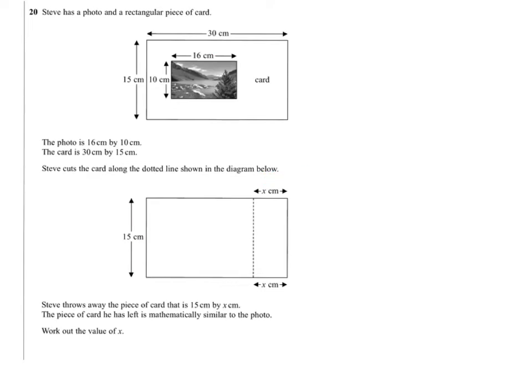So the 15 stays but we're going to take something off the 30. Steve throws away the piece of card that is 15 by the amount we cut off. We don't know that yet. The piece of card he has left is mathematically similar to the photo. Work out the value of x.